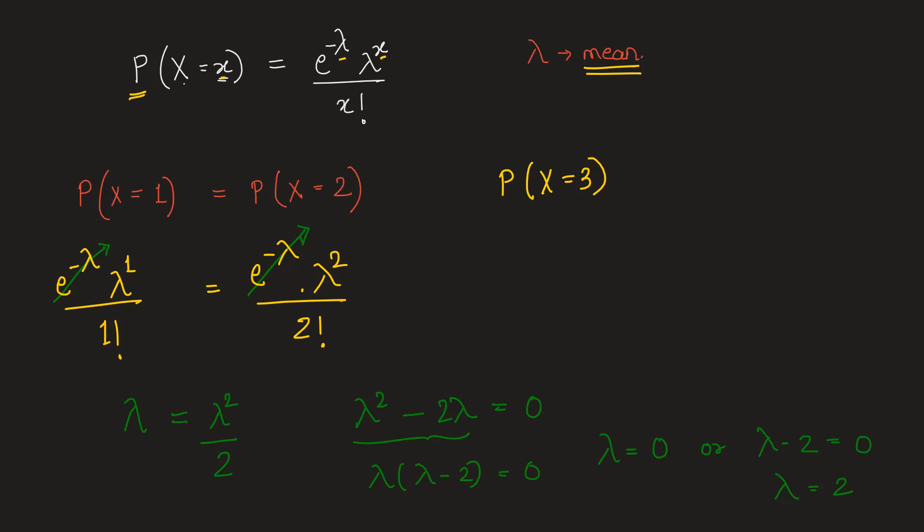Among these two values of lambda we need to choose the correct one. So the mean cannot be 0 here, because if the mean becomes 0 this complete term will go to 0, and therefore we need to adopt the value lambda equal to 2.